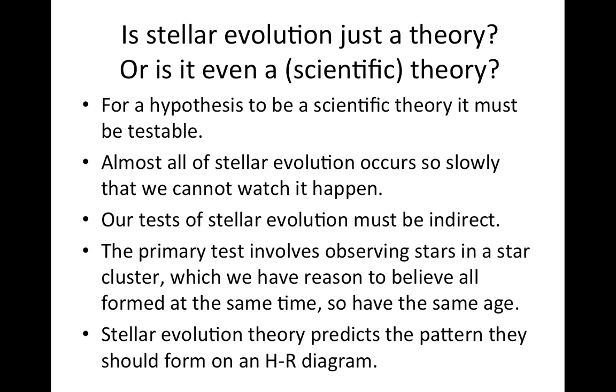The primary test involves observing stars in a star cluster. In a star cluster, we believe all the stars are formed at the same time, so they have the same age. By looking at stars of slightly different mass, we can get some idea of what's going on by comparing the properties of the stars and the stellar evolution models for stars of slightly different masses. And this predicts the pattern that stars of a fixed mass should have in an HR diagram as a function of age.